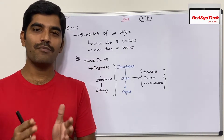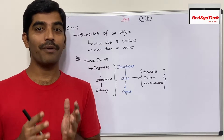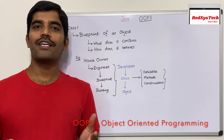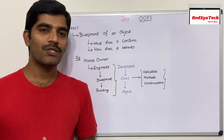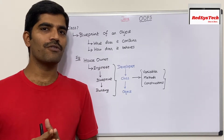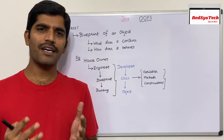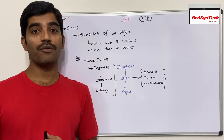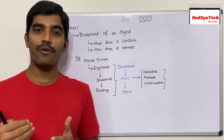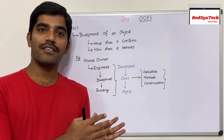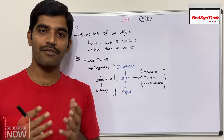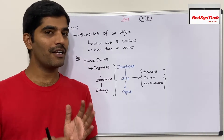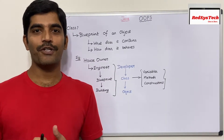Now it's time to get into the coding part, but before that there are some things we have to understand which are the basics of Java language — the object-oriented programming concepts, which we call OOP concepts. This covers what is object-oriented programming, what is a class, what is an object, and what are the features and principles of object-oriented programming. We'll go through these one by one with both a theory session and real-time implementation in the coding part.